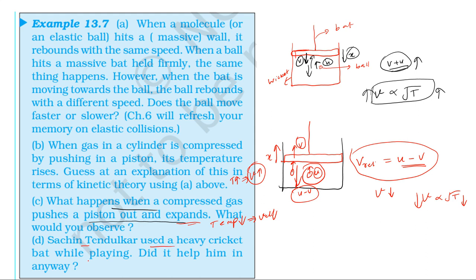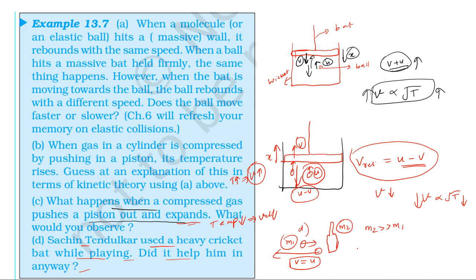Chachin Nendilkar used a heavy cricket bat while playing — did it help him in any way? With a heavy bat, the mass of the bat M2 is very much greater than M1. If you have a massive bat, the final velocity of the ball is greater than the initial velocity. Using a massive bat gives the ball a greater speed.